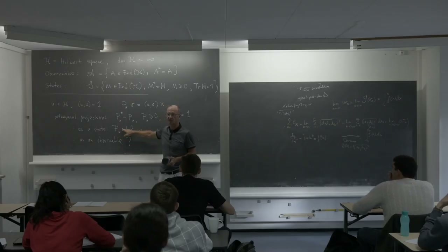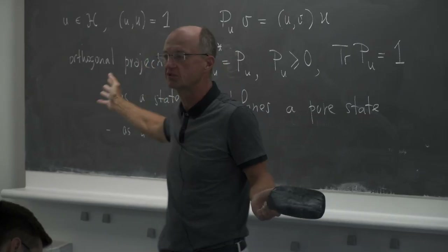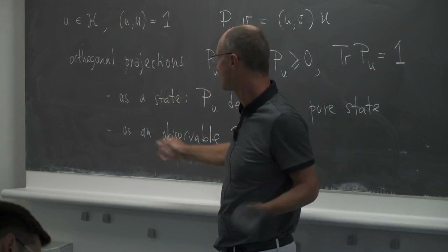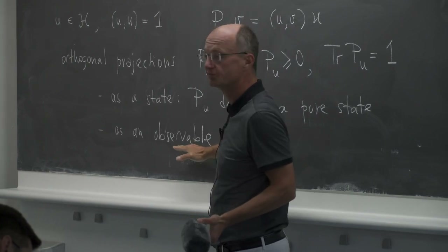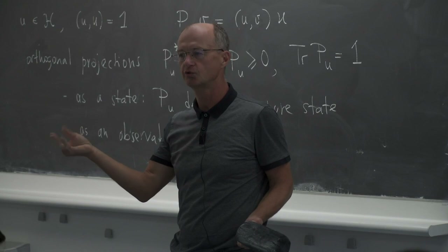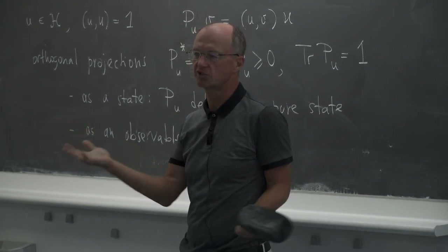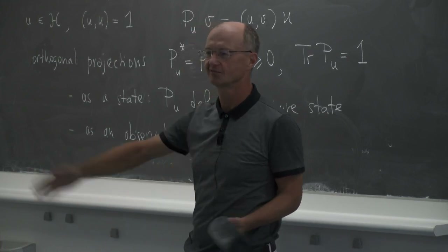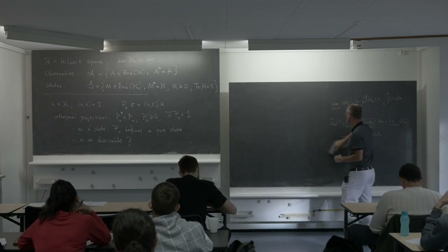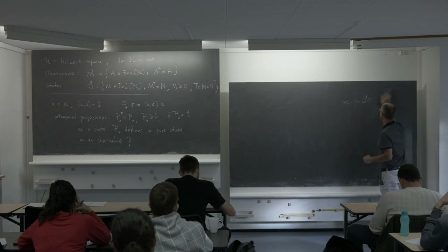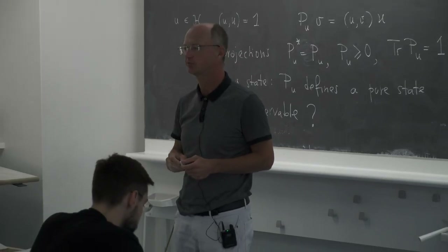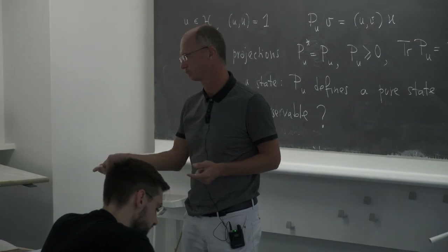The states correspond to length-one vectors — that is something we learned in quantum mechanics. But what are projection operators as observables? What do they measure? An observable corresponds to a physical quantity like mass, velocity, or position — so what do projections measure? This is the question about the dictionary connecting the mathematical formalism to the physics world.